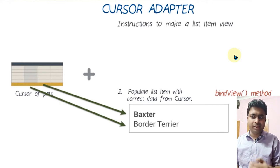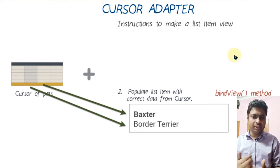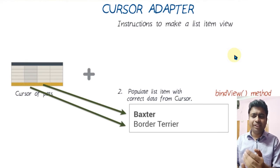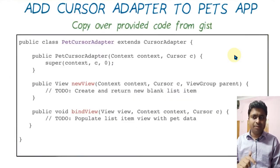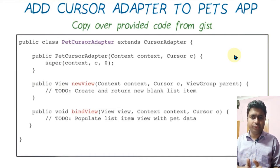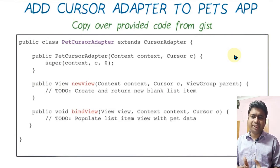This is how it works — the instructions in our cursor adapter. These instructions basically do the behind-the-scenes work, and we will use it further. I have given you the cursor adapter — you can copy it or you can write it, there is no issue. We can use the properties, we can use the cursor adapter, and we can use those properties in another class by inheriting the cursor adapter.